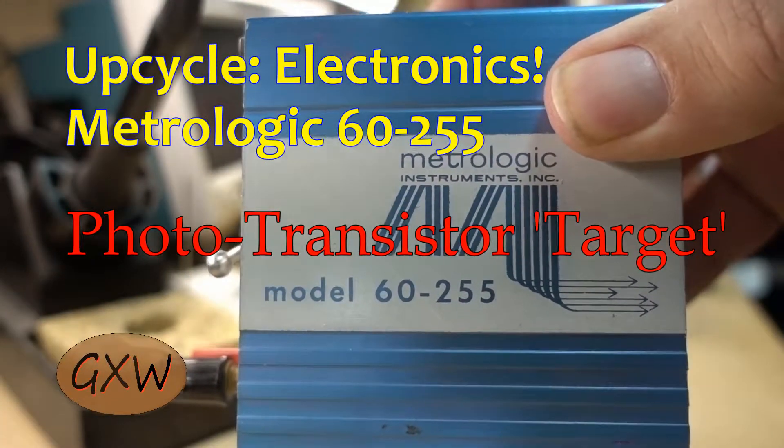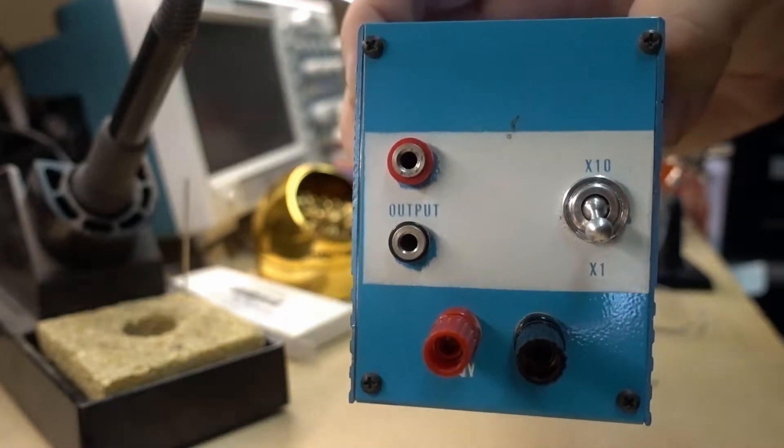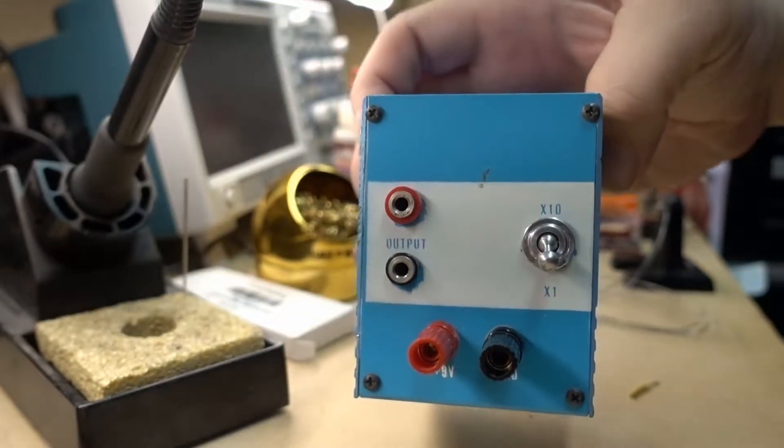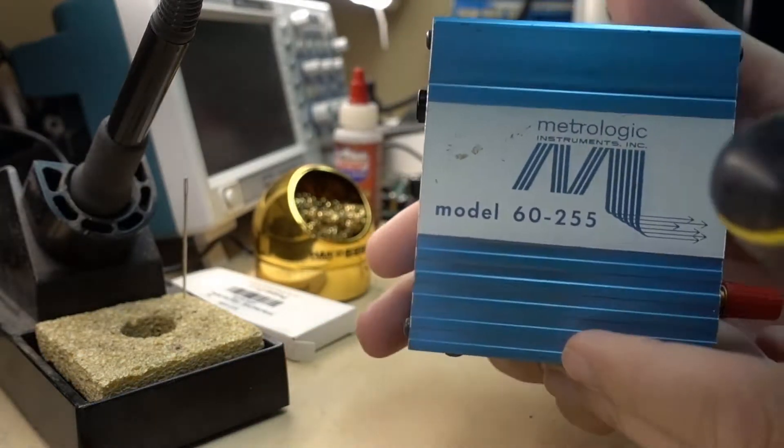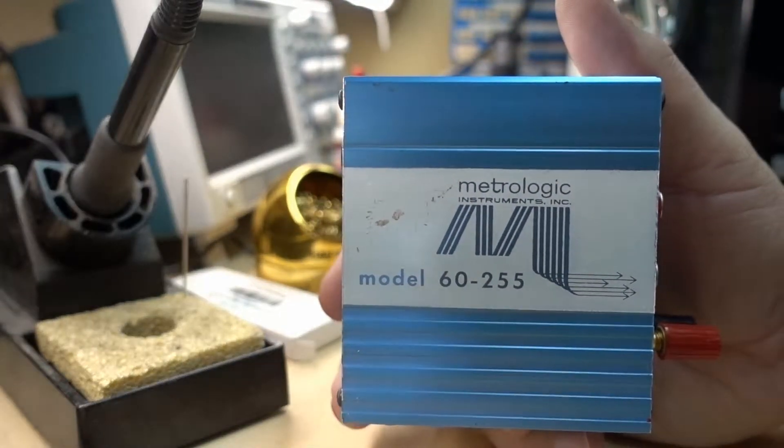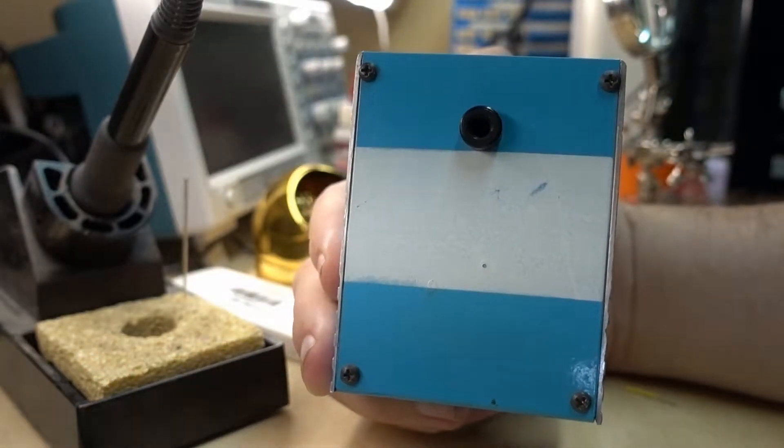Hi everybody, GXW here. This is a video about one of the millions of different things you can find when you're out looking at second-hand stores, garbage and recycling centers, just all sorts of strange places and there's no telling what you can come up with.